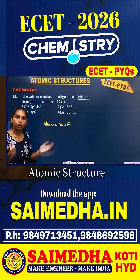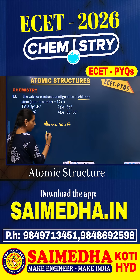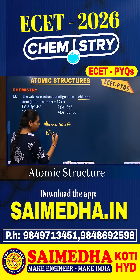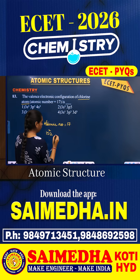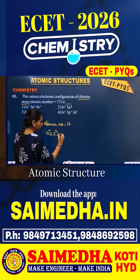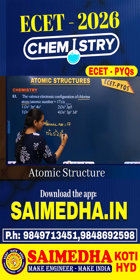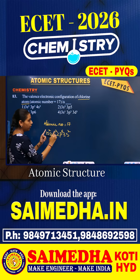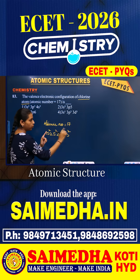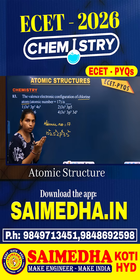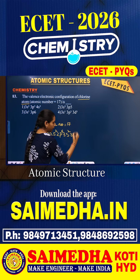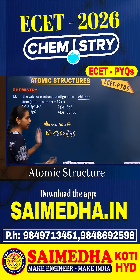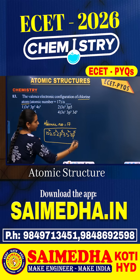Now let us write the electronic configuration: 1s², 2s², 2p⁶, 3s². Let us count how many electrons we have so far — that is 10, and 10 plus 2 is 12. The atomic number is 17, so 5 more electrons remain. Therefore, the next subshell is 3p⁵. This is the complete electronic configuration of chlorine.